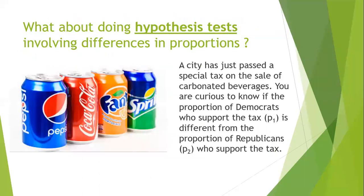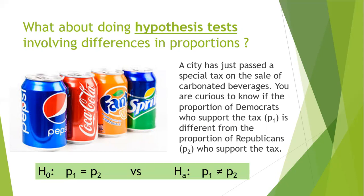Let's turn our attention now to hypothesis testing involving differences in proportions. Suppose a city has just passed a special tax on carbonated beverages, and we want to know if the proportion of Democrats who support the tax (P1) is different from the proportion of Republicans (P2) who support it. The null hypothesis is P1 equals P2, and the alternative hypothesis is P1 not equal to P2 — a two-tailed test.